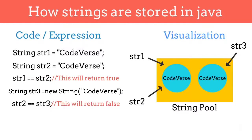So equal to operator is used to check if two variables are pointing to the same object in a string pool or not.